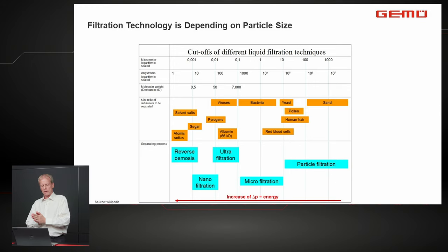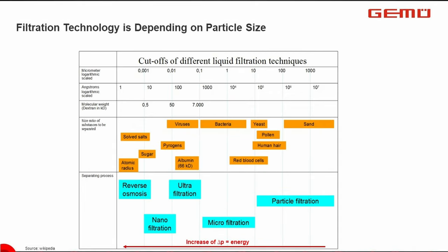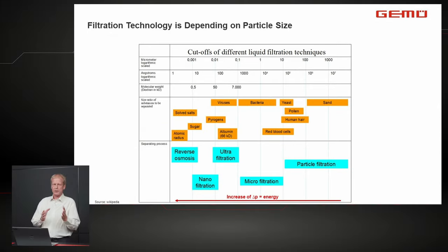Filtration removes particles and dissolved compounds. Microfiltration covers a particle size range of 0.5 to 10 micrometers — similar to coffee brewing, where the powder stays in the filter and the liquid flows through. Reverse osmosis is different: it can also remove salts and other dissolved compounds, but the energy consumption is high, so you can't use it for everything. Depending on pore size, different pressures — and therefore different energy consumption — are required.